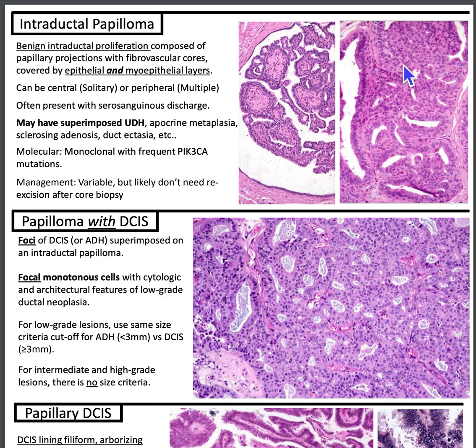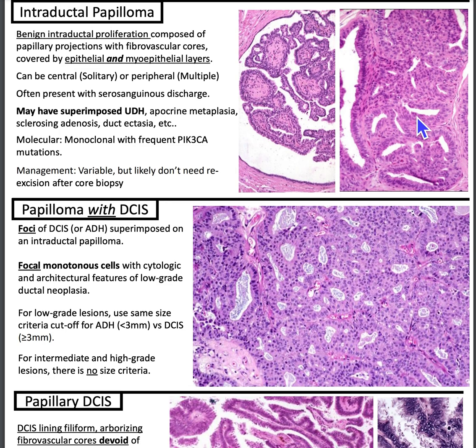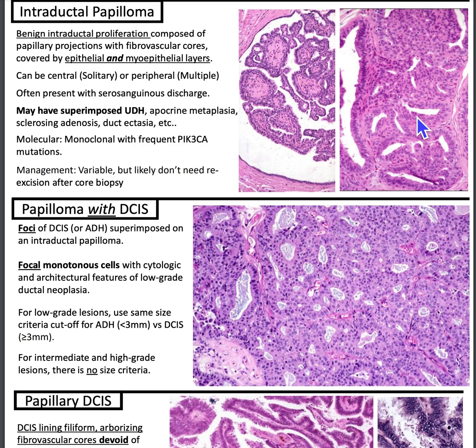It's important to remember that intraductal papilloma can have superimposed usual ductal hyperplasia, apocrine metaplasia, sclerosing adenosis, and ductectasia. Especially with sclerosing adenosis, it can mimic cancer, and sometimes myoepithelial cell staining can be a way to differentiate.